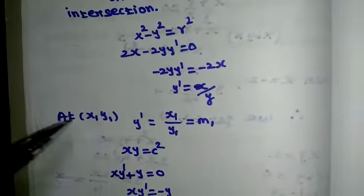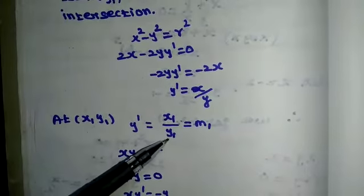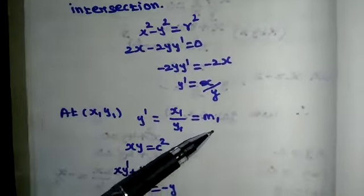At x1, y1, y dash is equal to x1 divided by y1 is equal to m1.